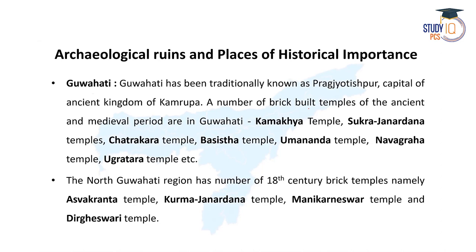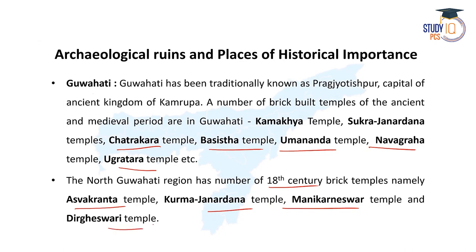Guwahati has been traditionally known as Pragjyotipur and was the capital of the ancient kingdom of Kamrup. In Guwahati, a number of brick-built temples of ancient and medieval period are found, including the Kamakhya temple, Janardhan temple, Basistha temple, Umananda temple, Nabagrah temple, and Ugratara temple. In the North Guwahati region, on the north bank of the Brahmaputra, a large number of 18th-century brick temples are also found, including Ashwakanta temple, Kurma Janardhan temple, Manikarneswara temple, and the Doul Govinda temple.